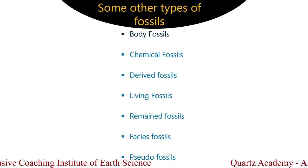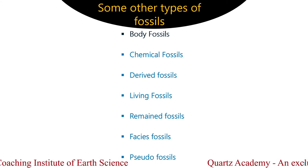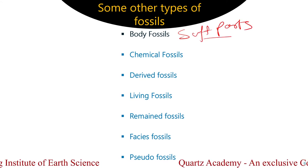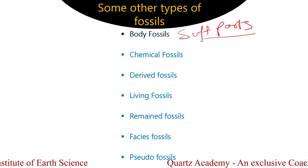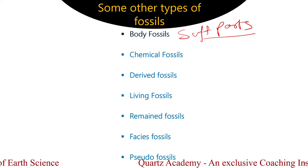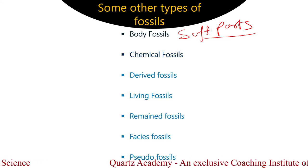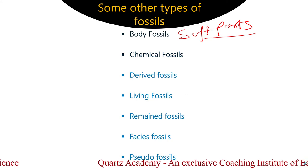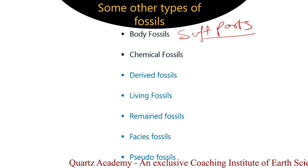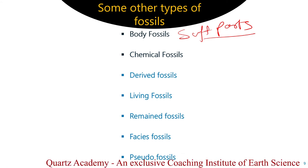Body Fossils are nothing but well-preserved entire organisms, including soft parts which are unaltered, and altered hard parts, as well as naturally formed mold and cast. Second is Chemical Fossil — these are nothing but well-preserved paleoproteins and amino acids, and structures from recrystallization and carbonization processes, grouped as chemical fossils.